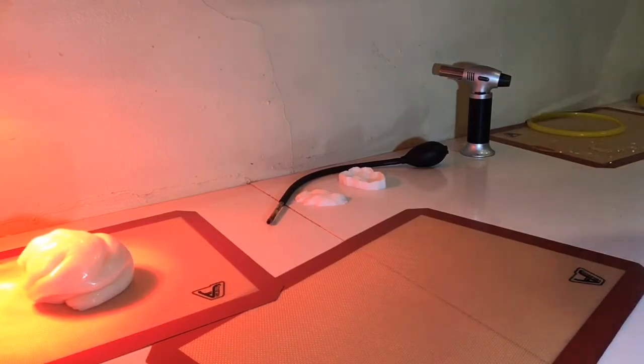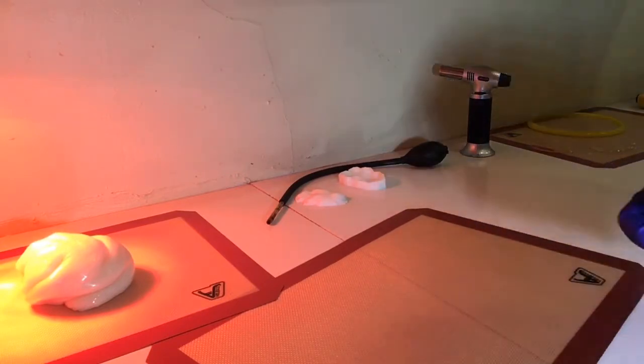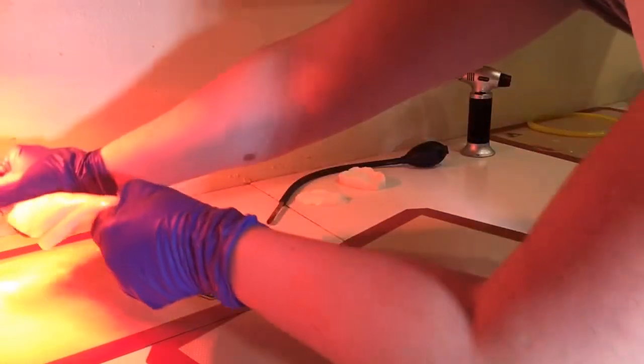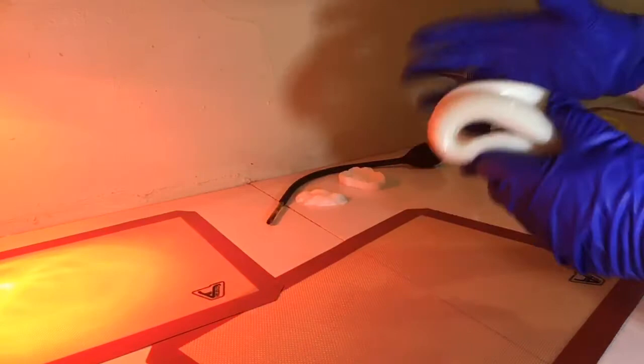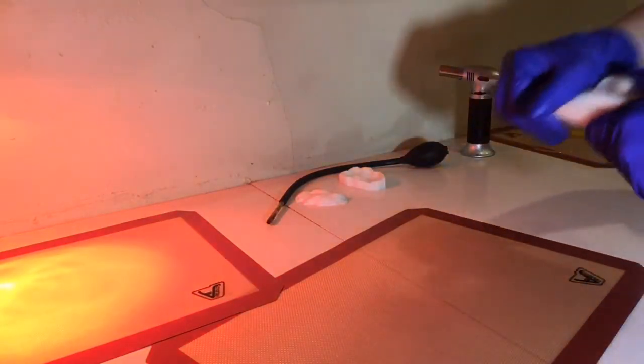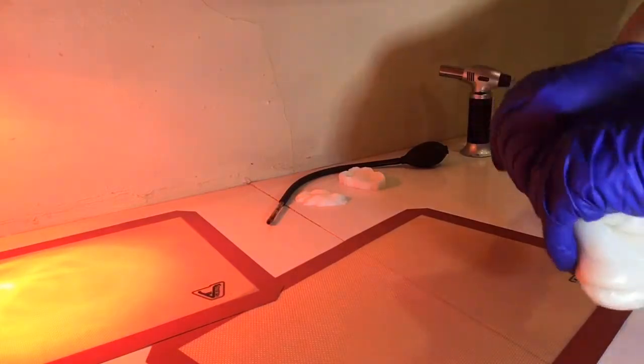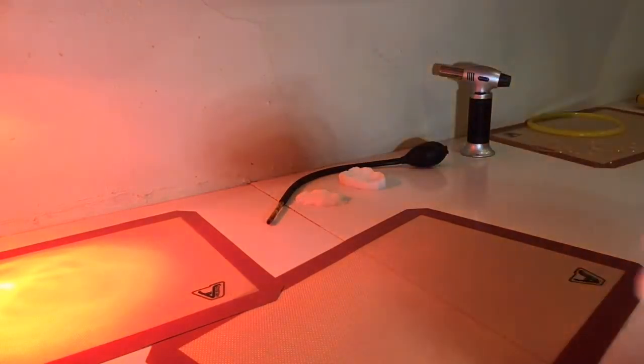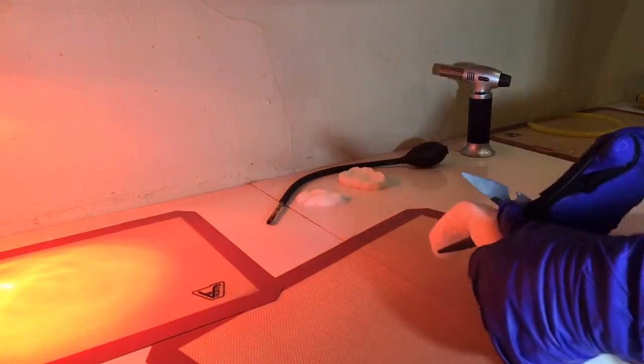Now I get these rubber gloves on first for a couple reasons. One, the sugar is very hot and two, it helps keep the shine for the pulled sugar if my hands aren't constantly in it. And I'm gonna give it a couple more pulls here to make sure that the temperature is all even. The reason I keep it under the warming lamp is to keep it soft enough that I can work with it because otherwise it'll get too hard.